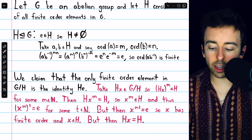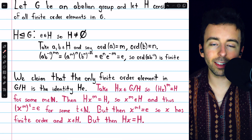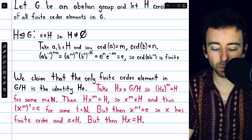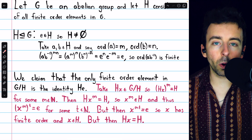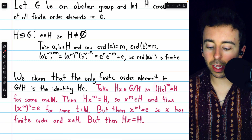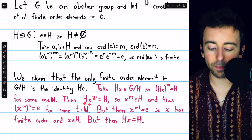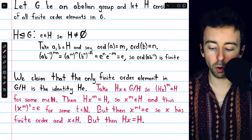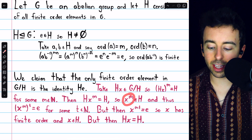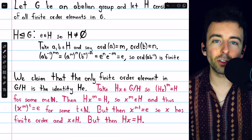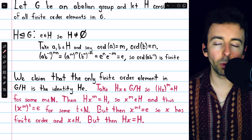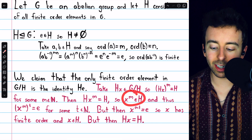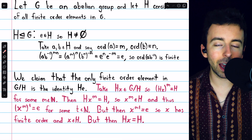Let's prove it. Let's say we take a coset Hx from G/H so that Hx has finite order. Thus, Hx to the M equals the identity H for some positive integer M. Then by definition of coset multiplication, Hx to the M is the same as Hx to the M, so Hx to the M must equal H — H being the identity element of the quotient group. We have then that x to the M is an element of H, because H is a subgroup and contains the identity, so one of the elements is the identity times x to the M, which is x to the M. So x to the M is an element of H, and thus x to the M has finite order.